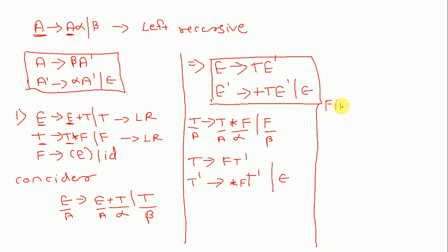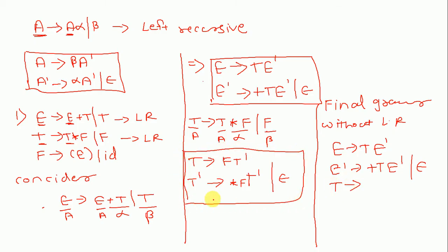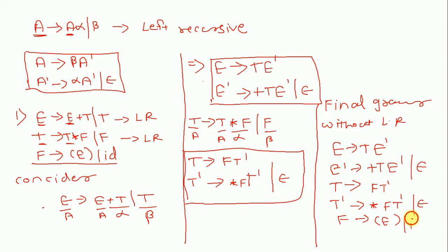Our final grammar without left recursion is: E gives T E-dash; E-dash gives plus T E-dash slash epsilon; T gives F T-dash; T-dash gives star F T-dash slash epsilon. And F has no left recursion, so F gives opening bracket E closing bracket slash id. This is our final grammar after removing left recursion.